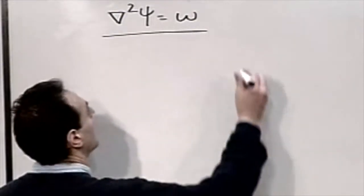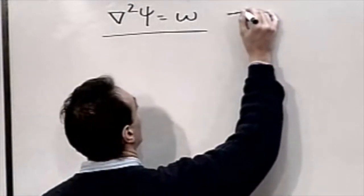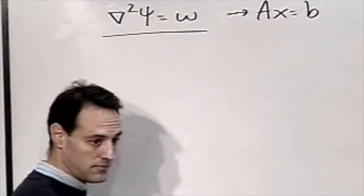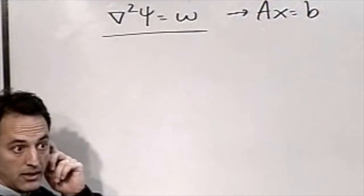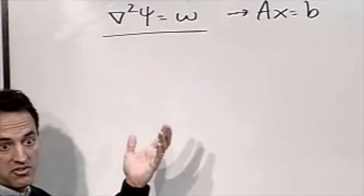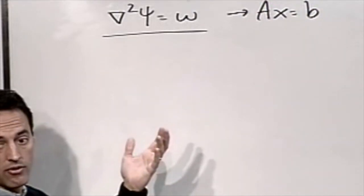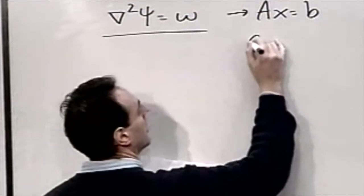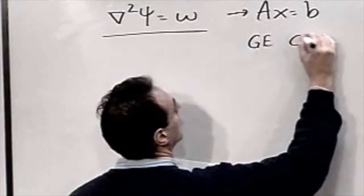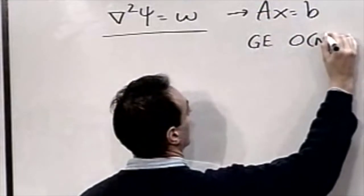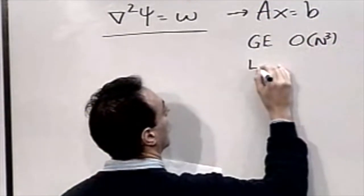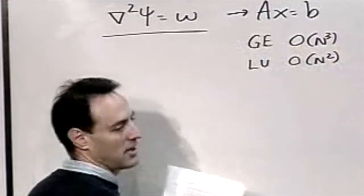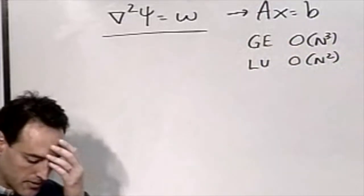What we've been talking about so far is to discretize the equation and reduce it to Ax = b, which is fairly easy to solve. We can use various techniques including Gaussian elimination, which costs O(n³), and LU decomposition, which is O(n²). So we have techniques for getting the solution.